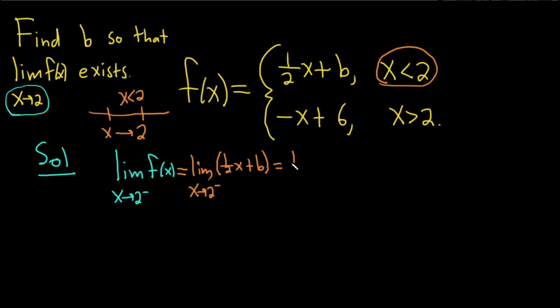So this is 1 half times 2 plus b. We drop the limit sign. So 1 half times 2 is 1, so this is 1 plus b.